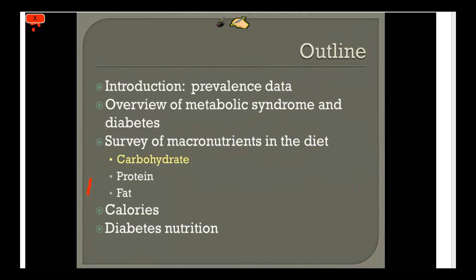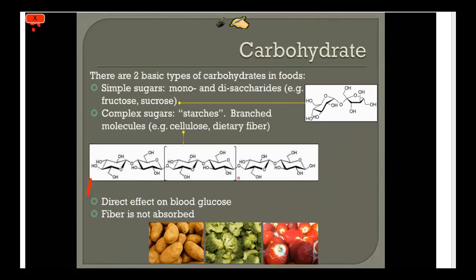Now we'll go ahead with nutrition, starting with carbohydrate. There are two basic types: simple sugars, which are mono- and disaccharides like fructose and sucrose, and complex sugars — the starches — which are more branched molecules, including dietary fiber. Carbohydrates in general have a direct effect on blood glucose; after you eat them, they're absorbed into the bloodstream directly. Fiber, however, is not absorbed — so it won't affect blood sugar.